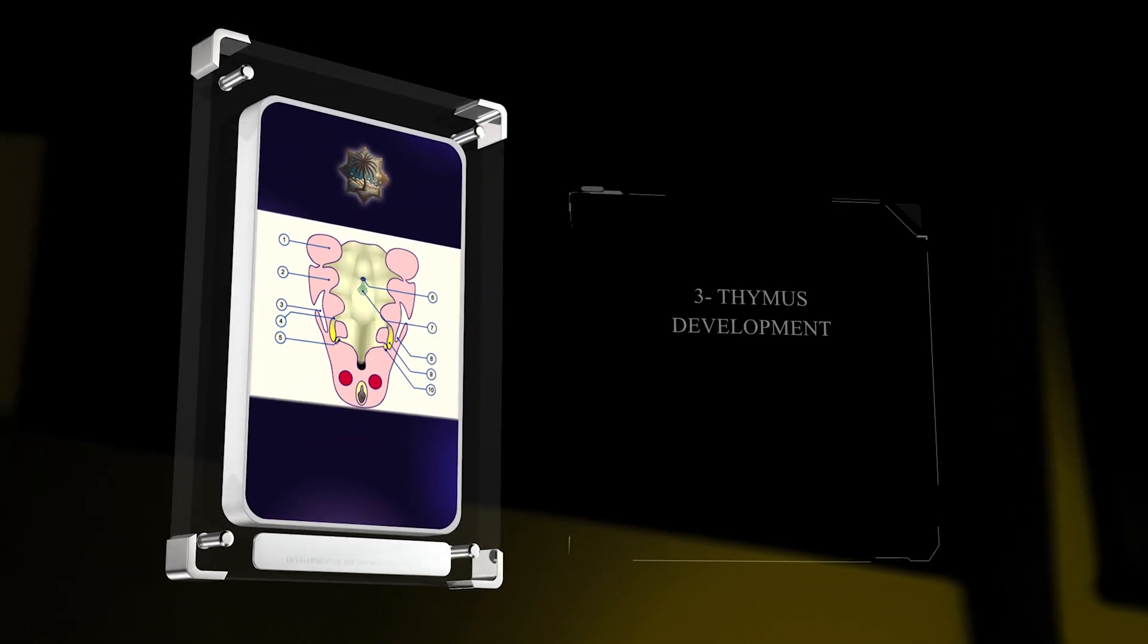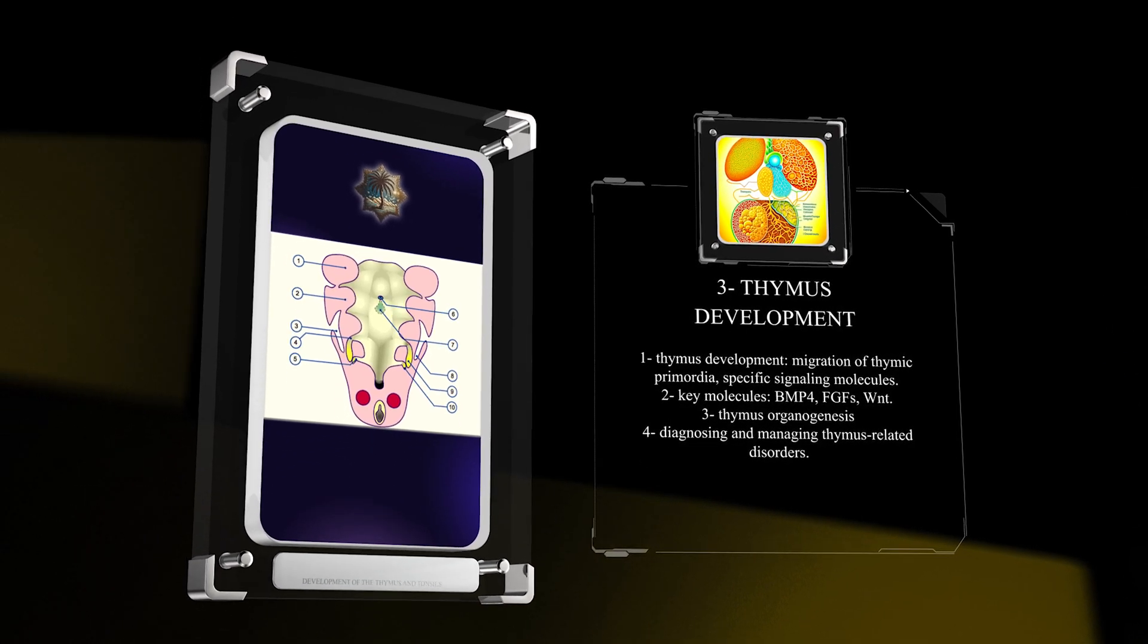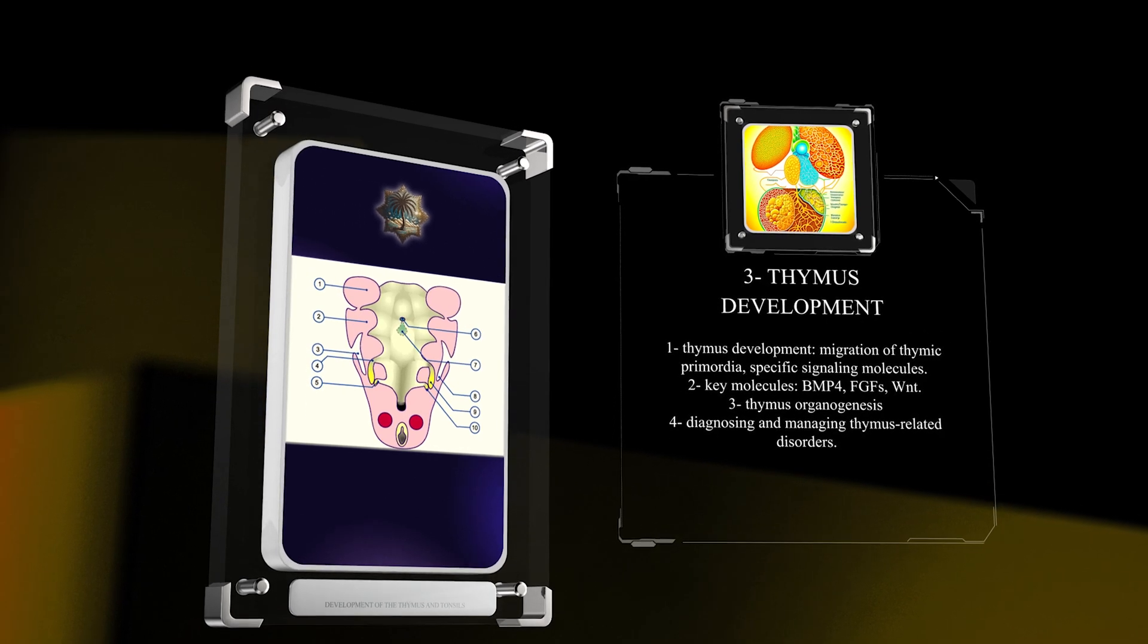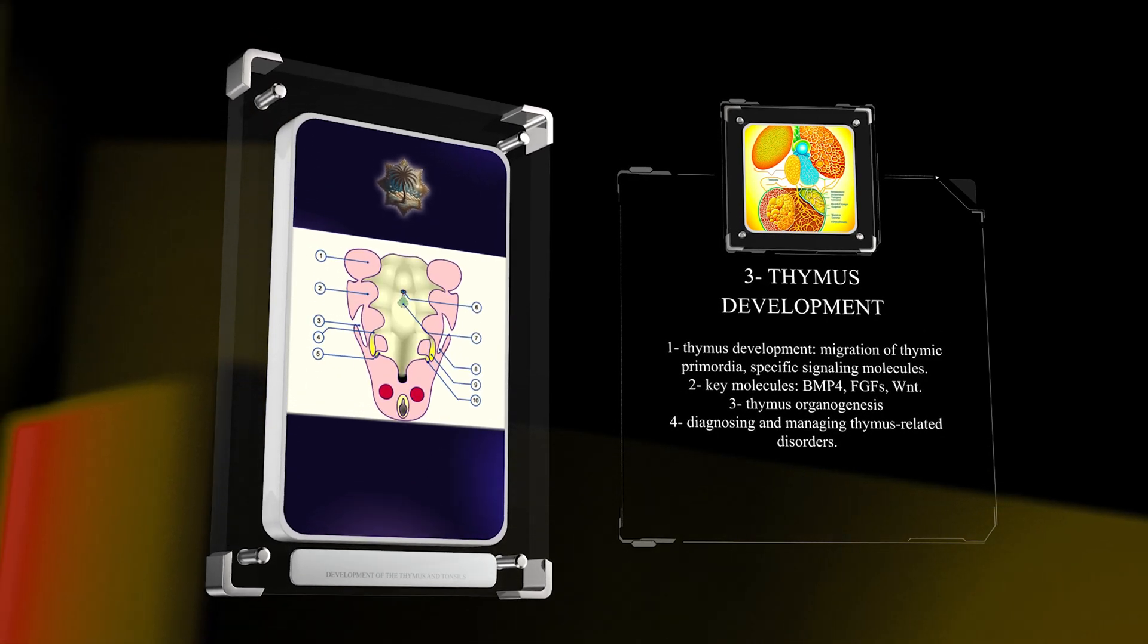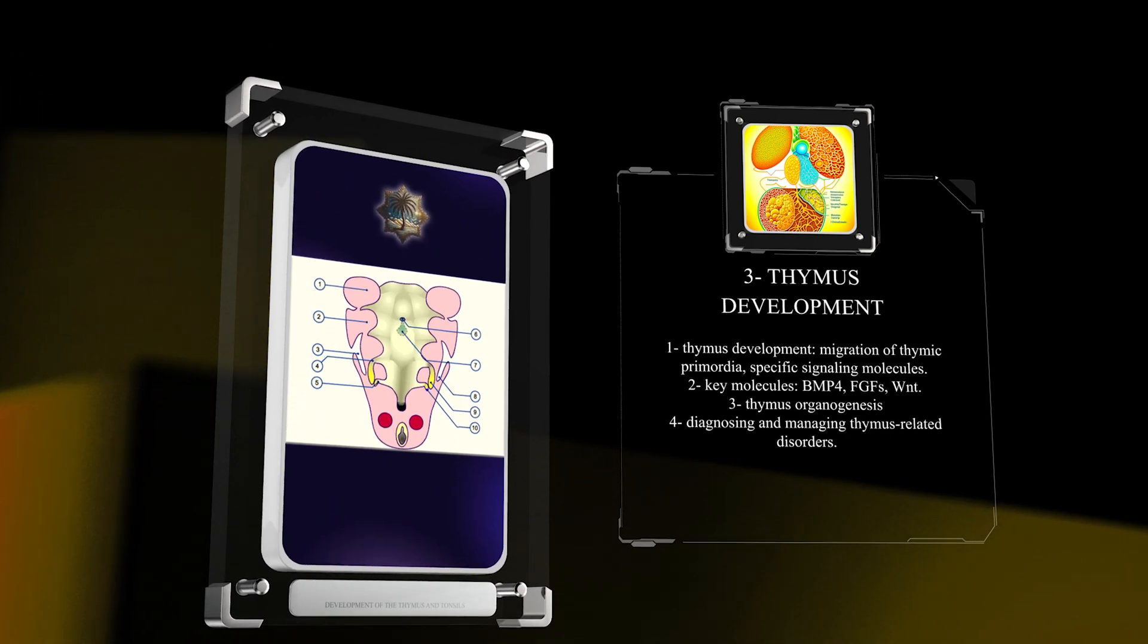The development of the thymus requires the migration of thymic primordia and the involvement of specific signaling molecules. Key molecules like BMP4, FGFs, and WNT play crucial roles in thymus organogenesis. Understanding these steps is important for diagnosing and managing thymus-related disorders.